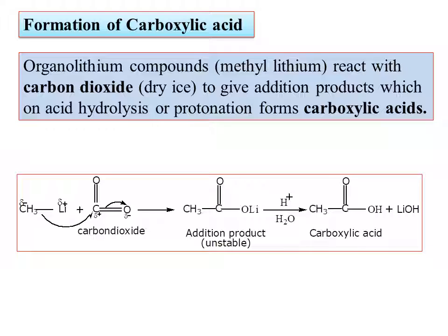For the formation of a carboxylic acid (COOH group), we treat the organolithium compound with carbon dioxide (CO2). The product is also an unstable adduct, which on further hydrolysis gives the carboxylic acid. One of the reactants — the organolithium — is the same; changing the other reactant changes the product.